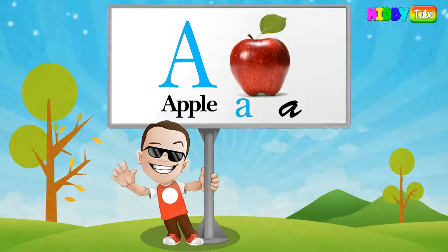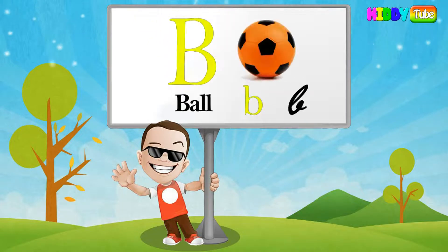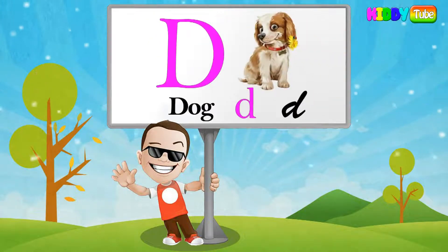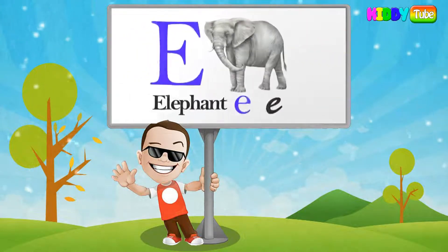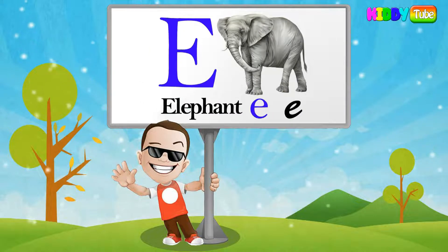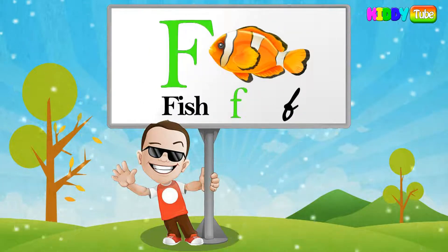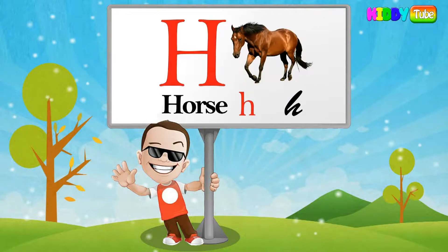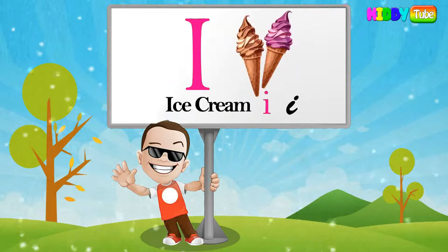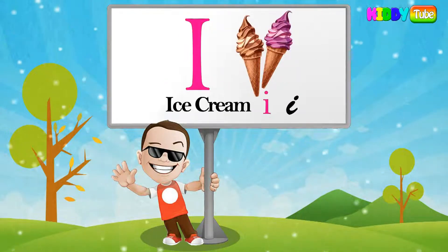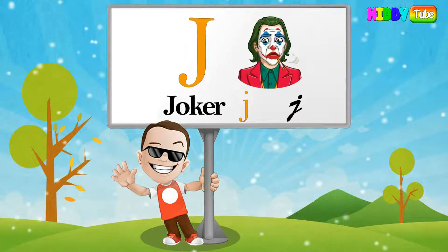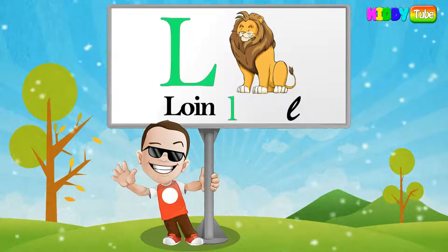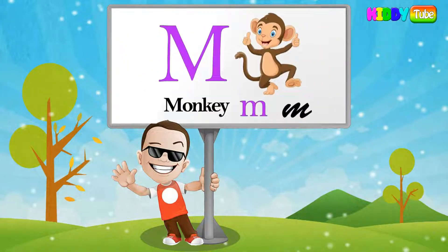A for apple, B for ball, C for cat, D for dog, E for elephant, F for fish, G for goat, H for horse, I for ice cream, J for joker, K for kite, L for lion, M for monkey.